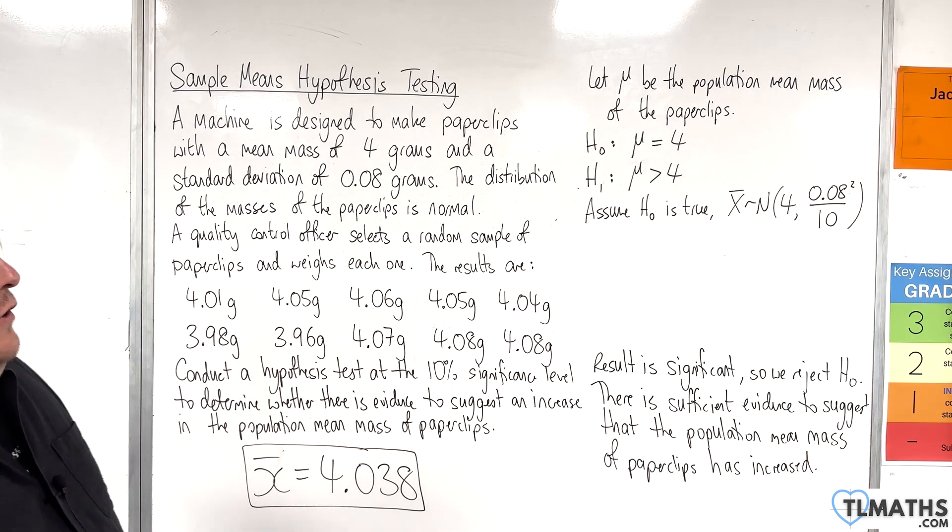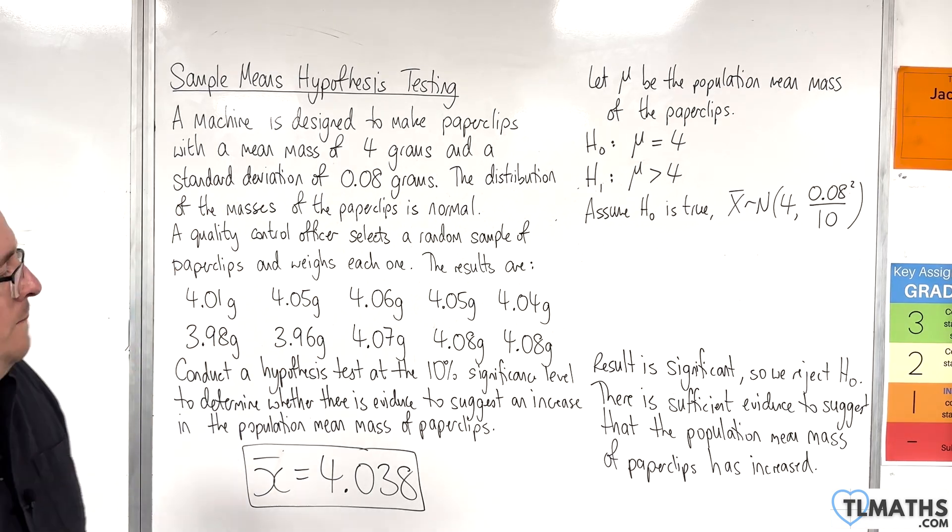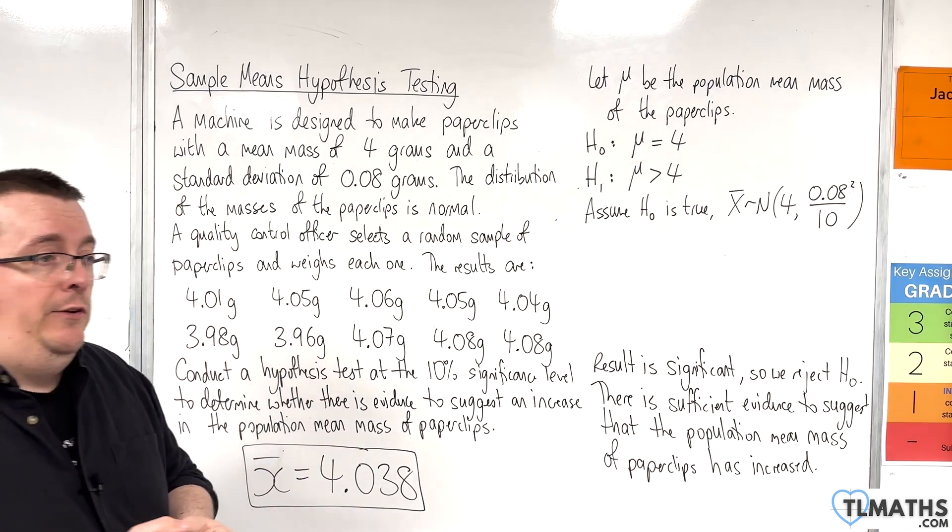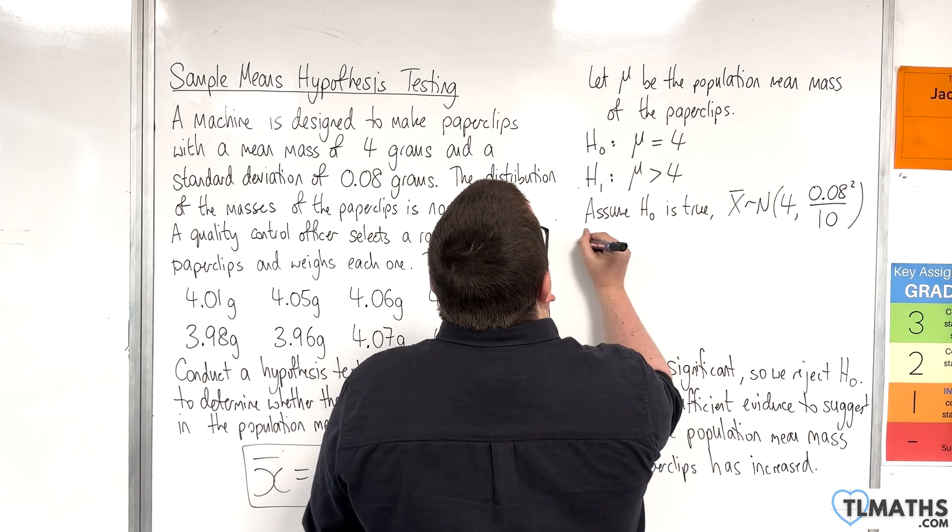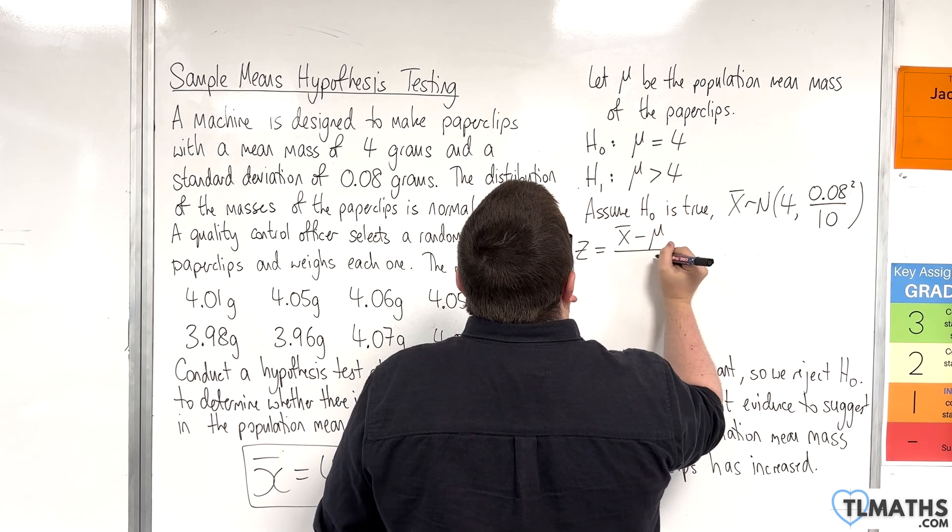Now we've got everything set up, we know what the conclusion is. In order to find the test statistic, we need to use that coding where z equals x̄ take away the mean μ over the standard error, so divided by σ over root n.